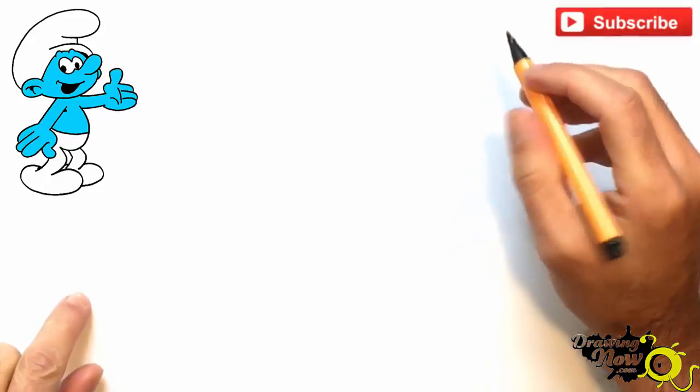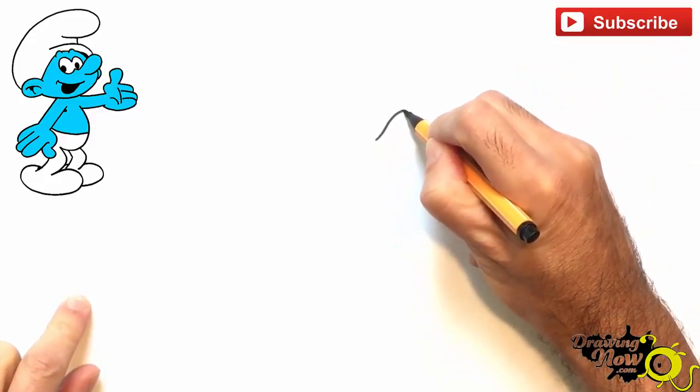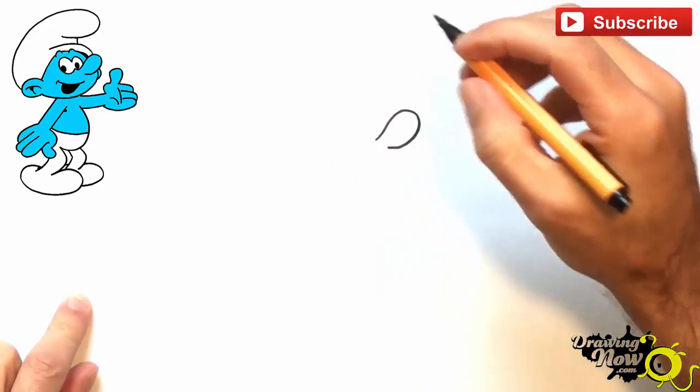So we will start right in the middle with the nose. The nose is kind of a potato shape, so just go there, it's a kind of warm-up situation. See, this is the nose, don't have to be too precise.